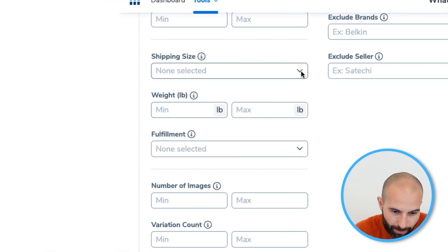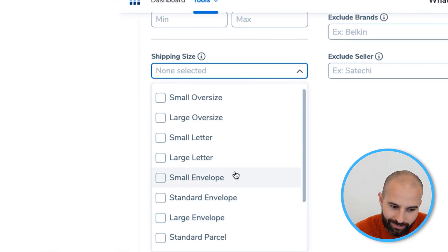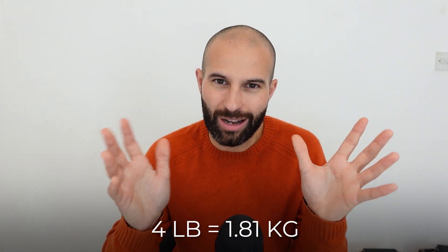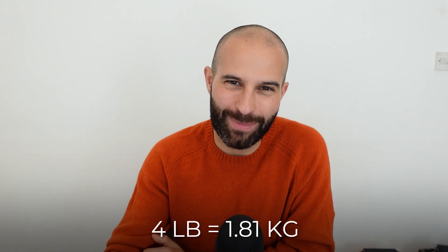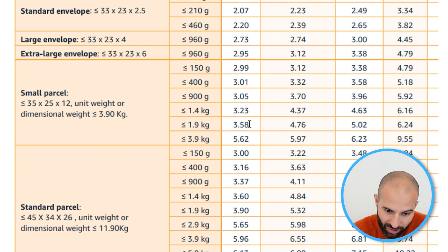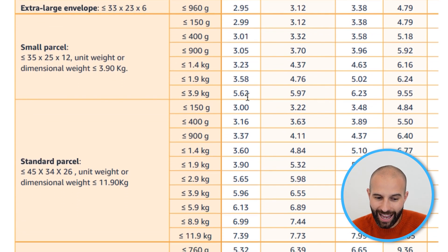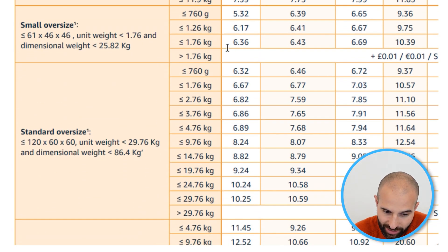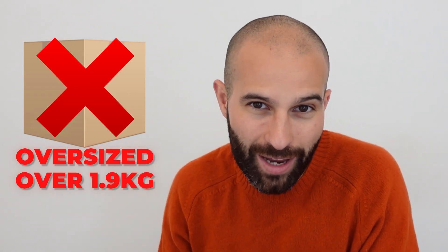We've just got two more filters to add: shipping size and weight. For shipping size, select everything apart from oversize. Then select a maximum weight of around 4 pounds, which is just under 2 kilos. The reason is you don't want your Amazon fulfilment fees to be too high. Looking at the rate card, once you get over 1.9 kilos the fees really jump up — for small parcel from £3.58 to £5.62, and for standard size from £3.90 to £5.65. Oversized products have much higher fees too, so avoiding oversize and anything over 1.9 kilos keeps fulfilment fees cheaper.